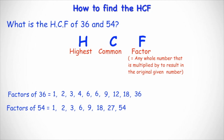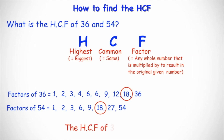So these are all the factors of 36 and 54. Now we want to find the highest — the biggest — number that is common or the same in both of these lists. We can see that 1, 2, 3, 6, and 9 are all in common, but these are not the highest. The biggest number that's common to both lists is 18 — it appears in both lists and it's the largest. So the HCF, or the highest common factor, of 36 and 54 is 18.